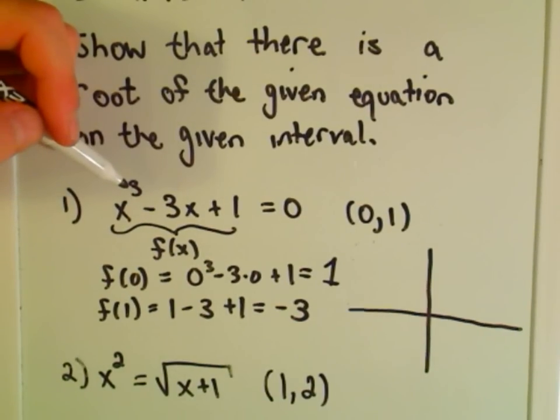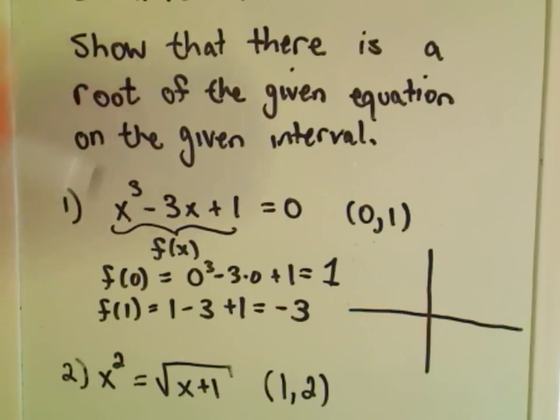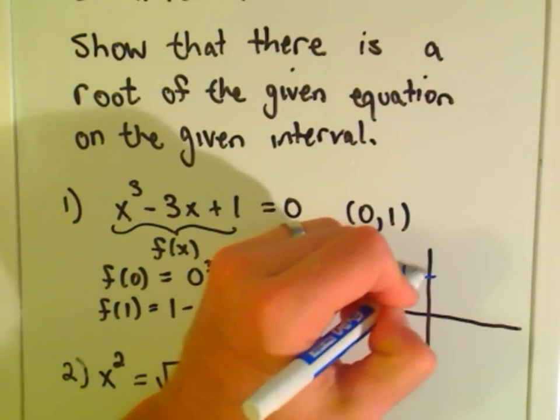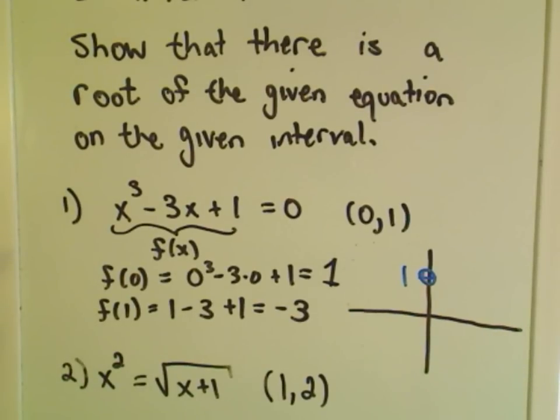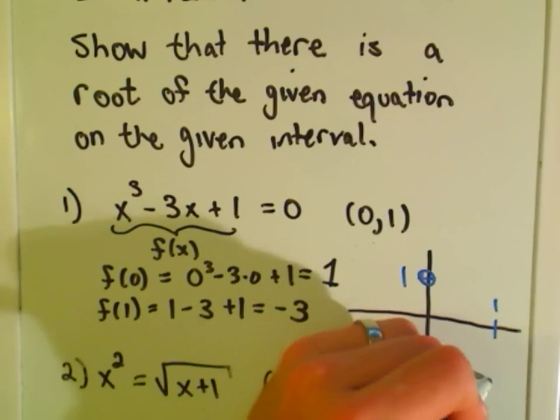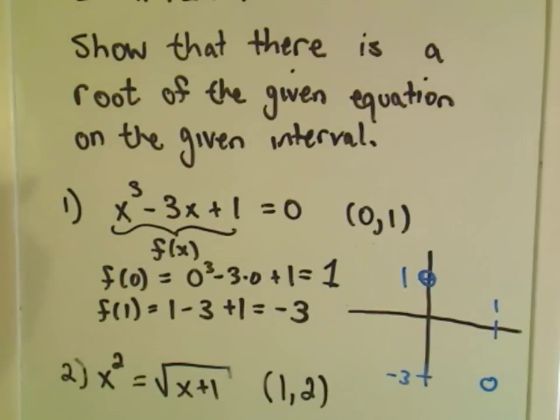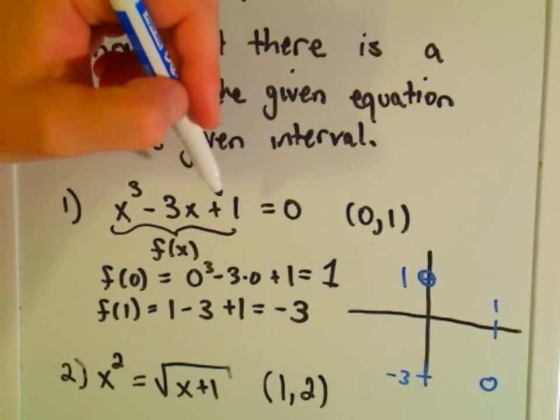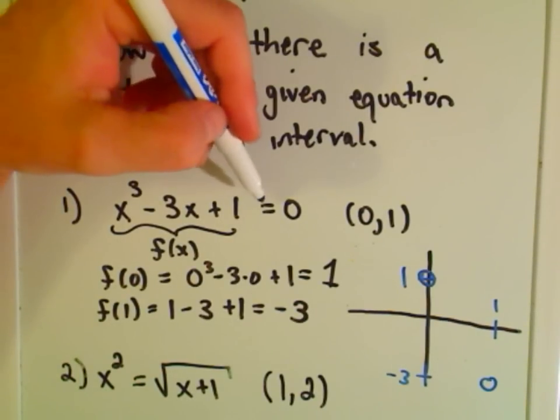And if you think about the graph of this function, the main thing, the main reason you can use the intermediate value theorem here is, well, x cubed minus three x plus one is a polynomial. So it says if you plug zero in, it says you're getting one out. Okay, so it wasn't actually defined there, but that's okay. It says if you plug one in, you get negative three out.